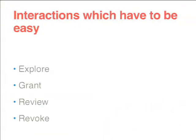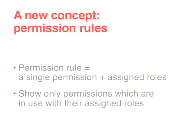We have interactions which have to be easy: explore the obtainable permissions, grant permissions to roles, review assigned roles and permissions, and revoke permissions from roles. We worked out a new concept called permission rules. A permission rule is a single permission plus the assigned roles. The main idea is: why don't we show only those permissions which are in use on the website?